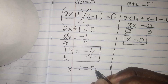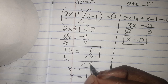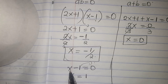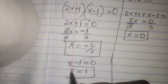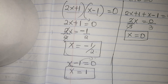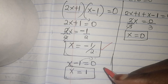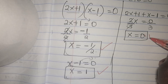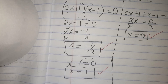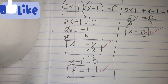Our third value comes from x minus 1 equals 0, so x equals 1. We have now solved the cubic equation: x equals negative one-half, x equals 0, and x equals 1. Remember to like, subscribe, and comment down below. Bye bye, see you in my next video!